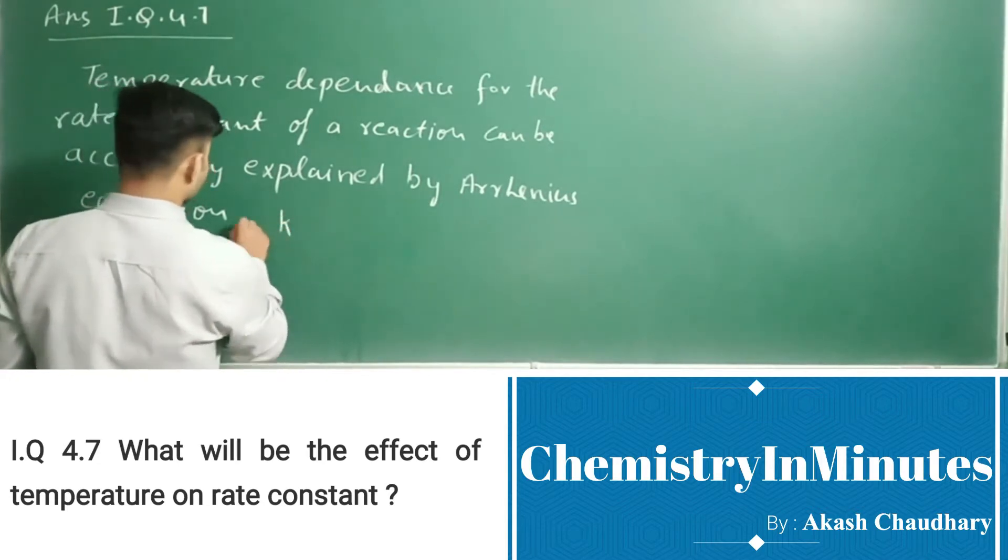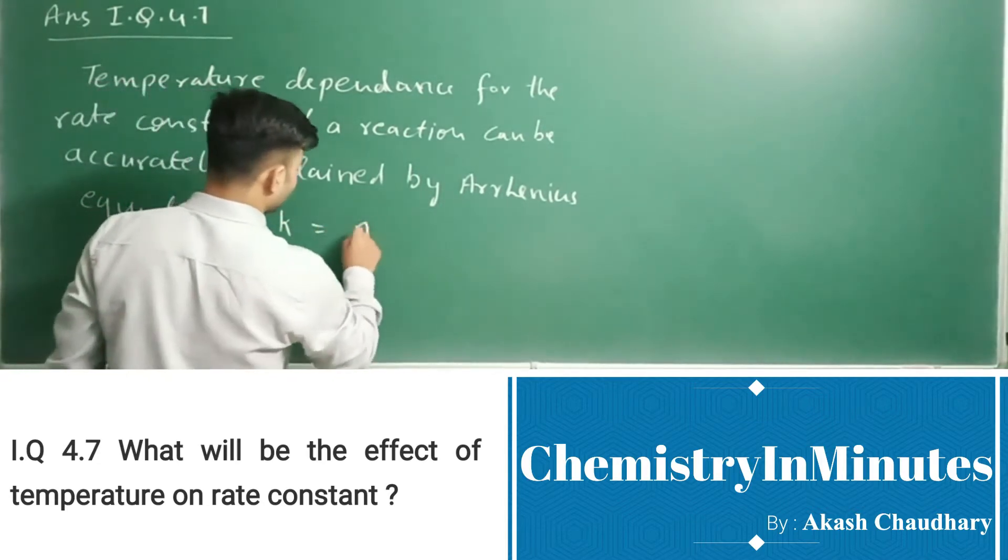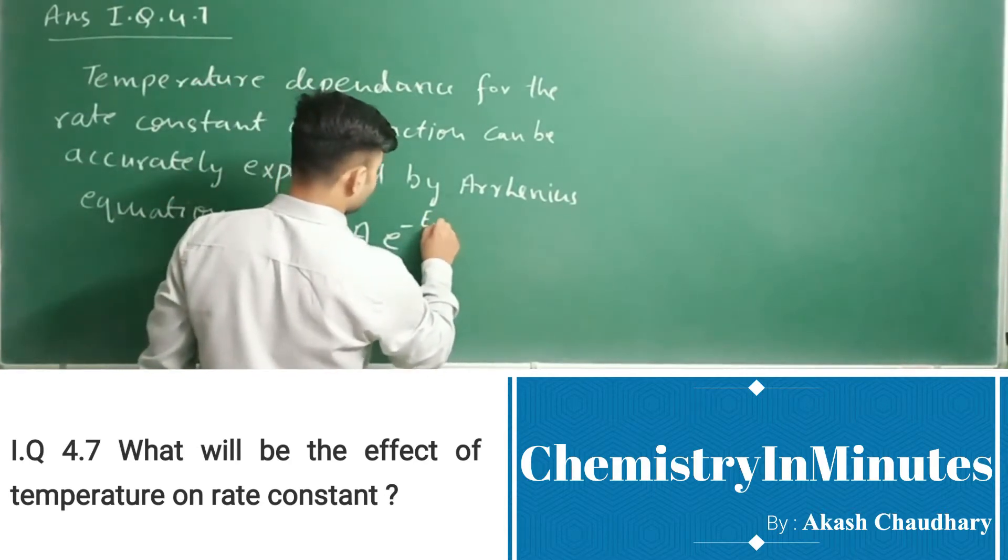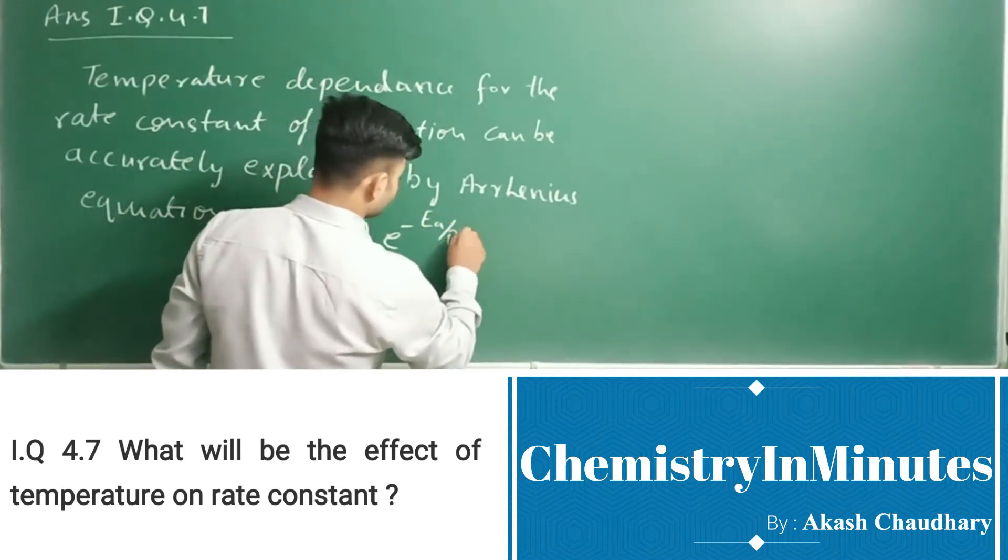k equals A times e raised to the power minus Ea upon RT.